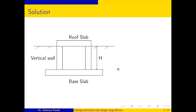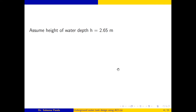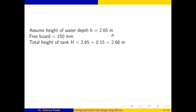Starting with dimensions: I have assumed a water depth of 2.65 meters. I kept this height the same as other water tank design videos so that the plan dimensions vary while height stays constant at 150 cubic meter capacity. Freeboard is 150 mm, so the total height of the tank is 2.65 plus 0.15 equals 2.8 meters.